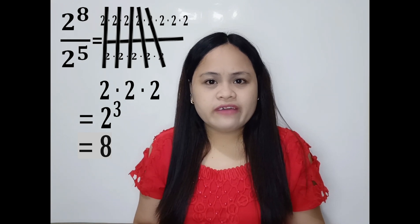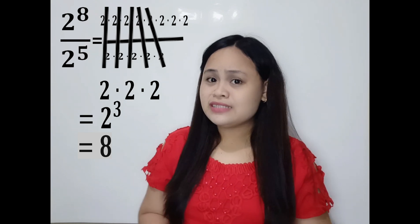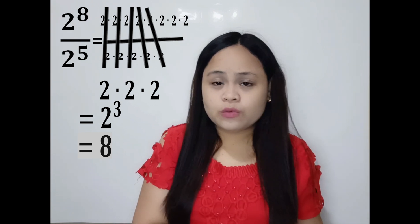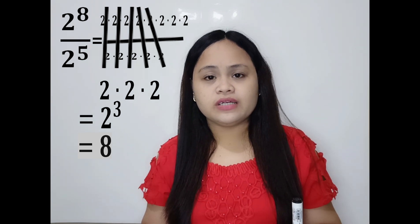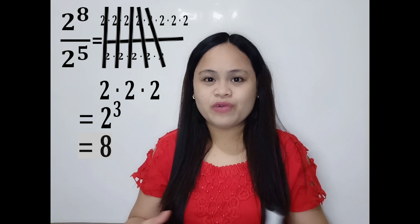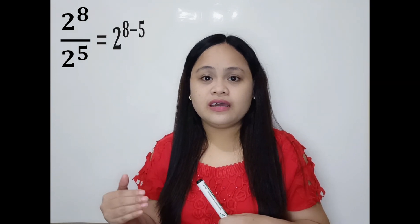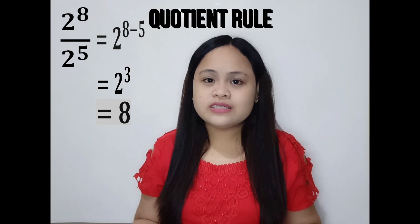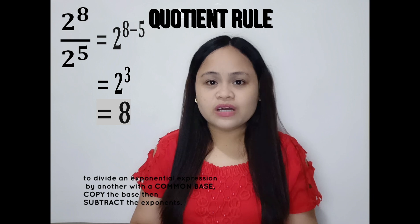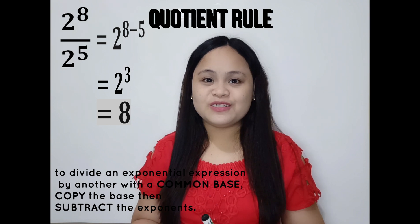So what is the easier way of dividing two exponential expressions? Why don't we just copy the base 2 — kasi parehas naman yung base. Kung dun sa product rule, kinocopy din natin yung base pero ina-add natin yung exponents. Kapag nagdedivide naman tayo, kinocopy din natin yung common base, pero isasubtract natin yung exponents. So we can just subtract 8 minus 5 to get 3, giving us 2 to the power of 3. And that is the quotient rule.